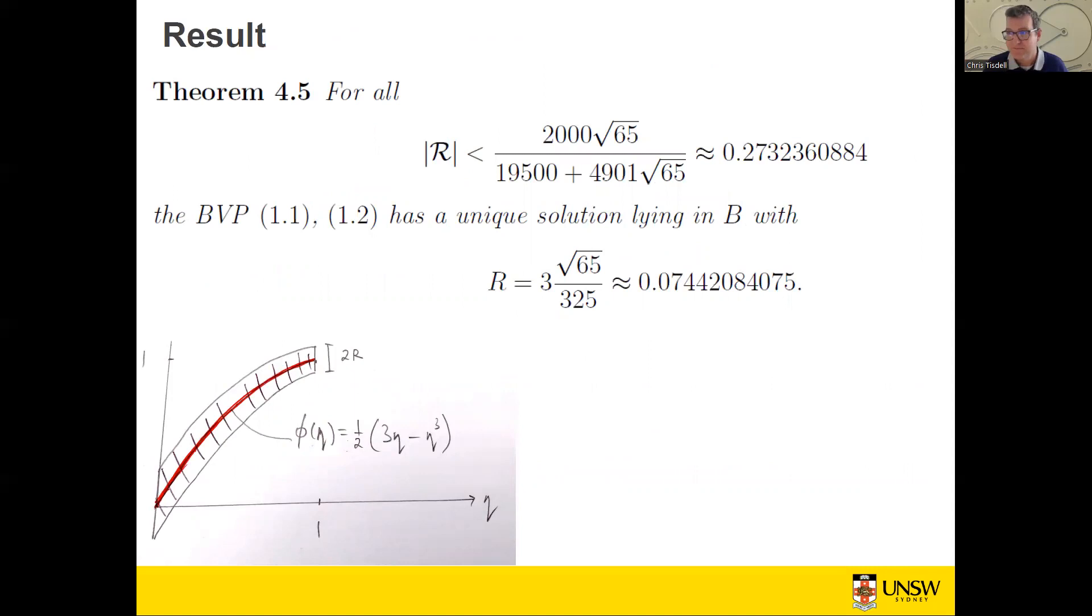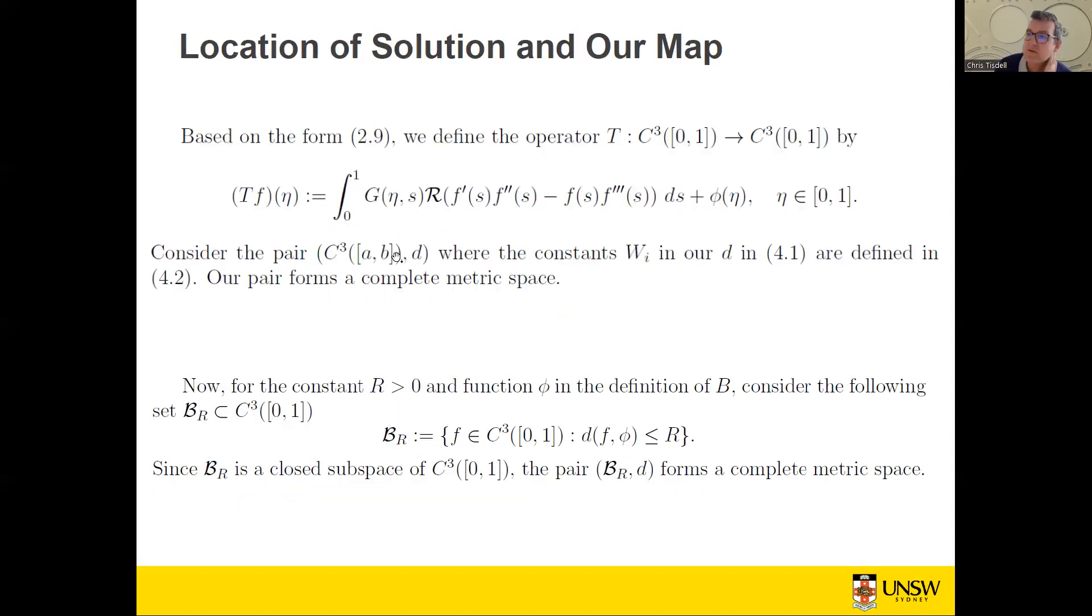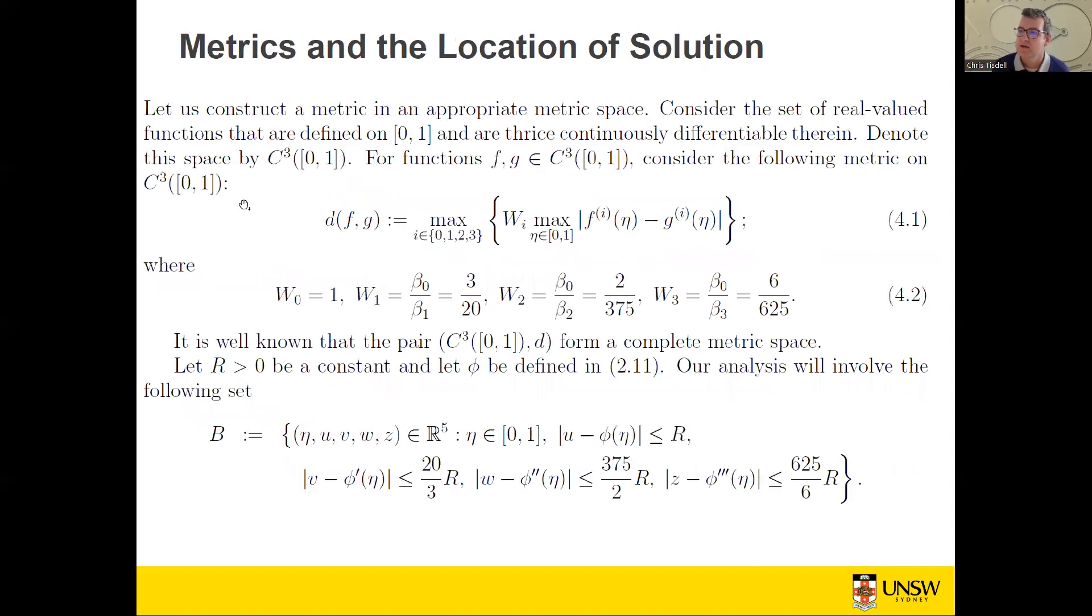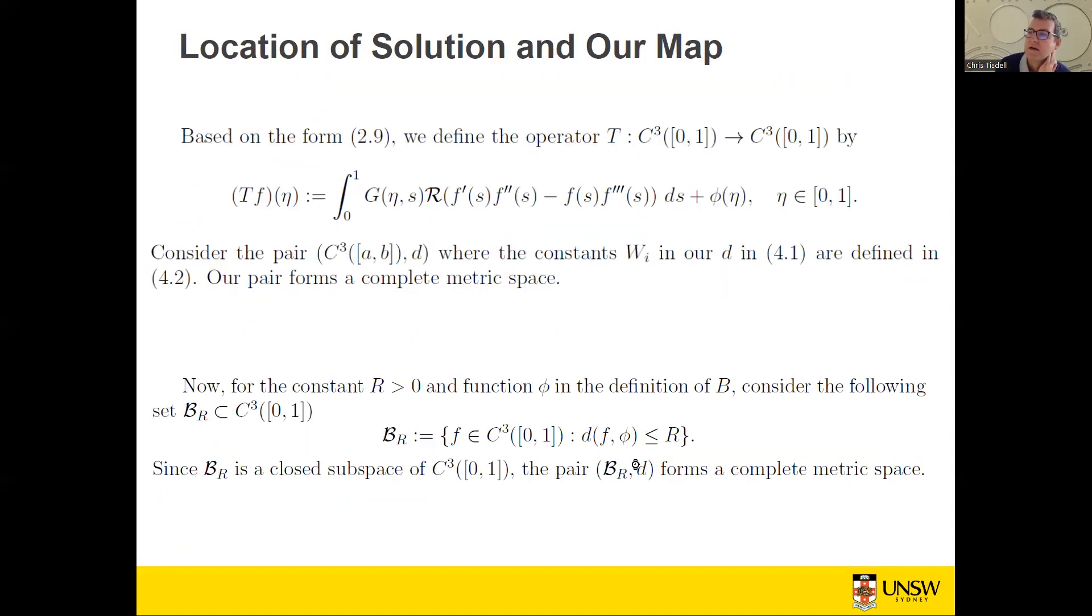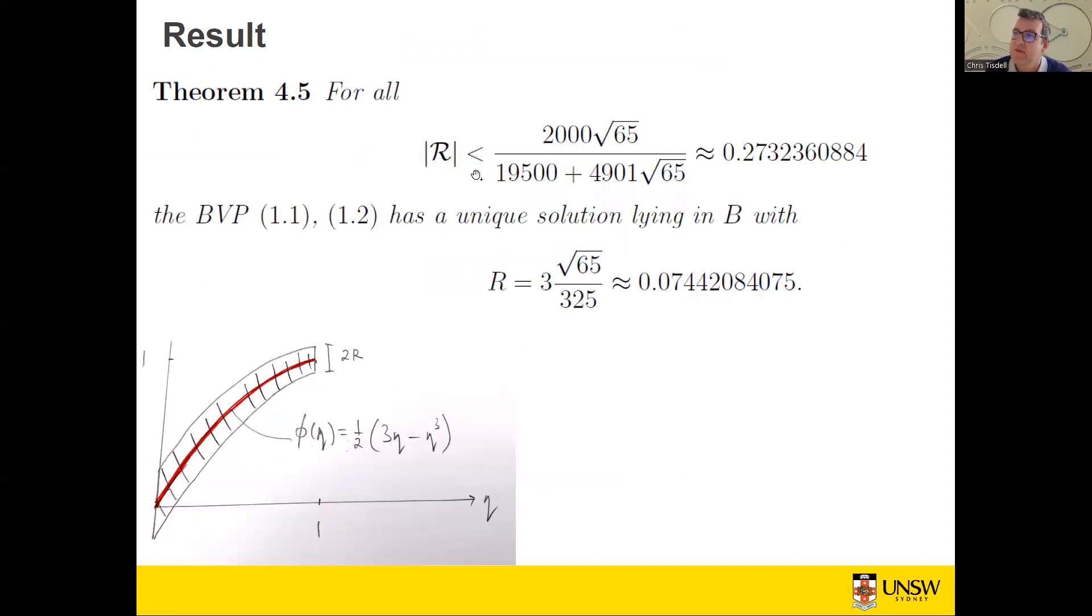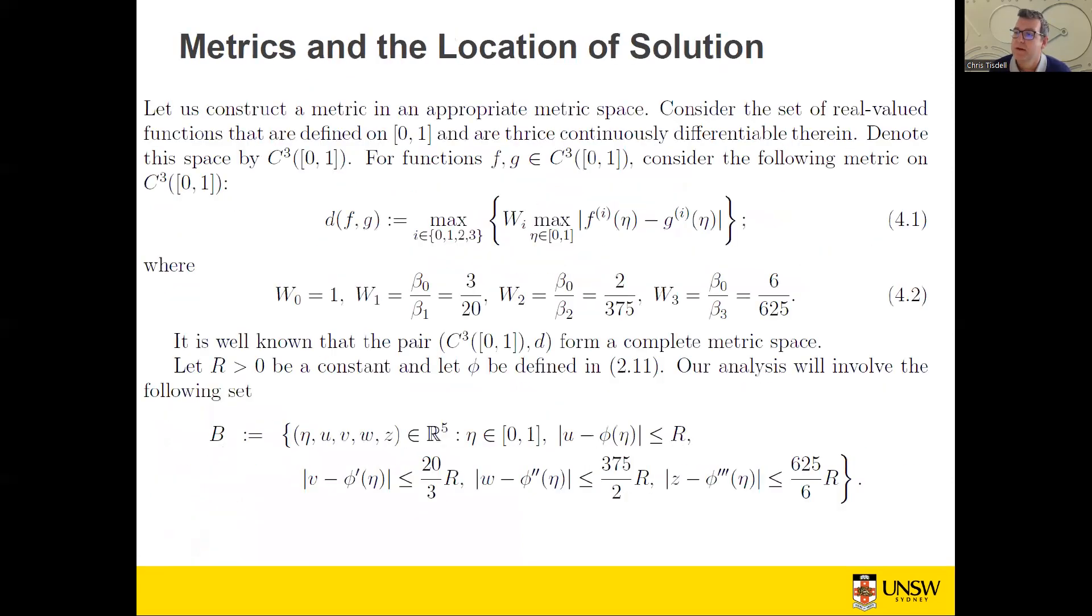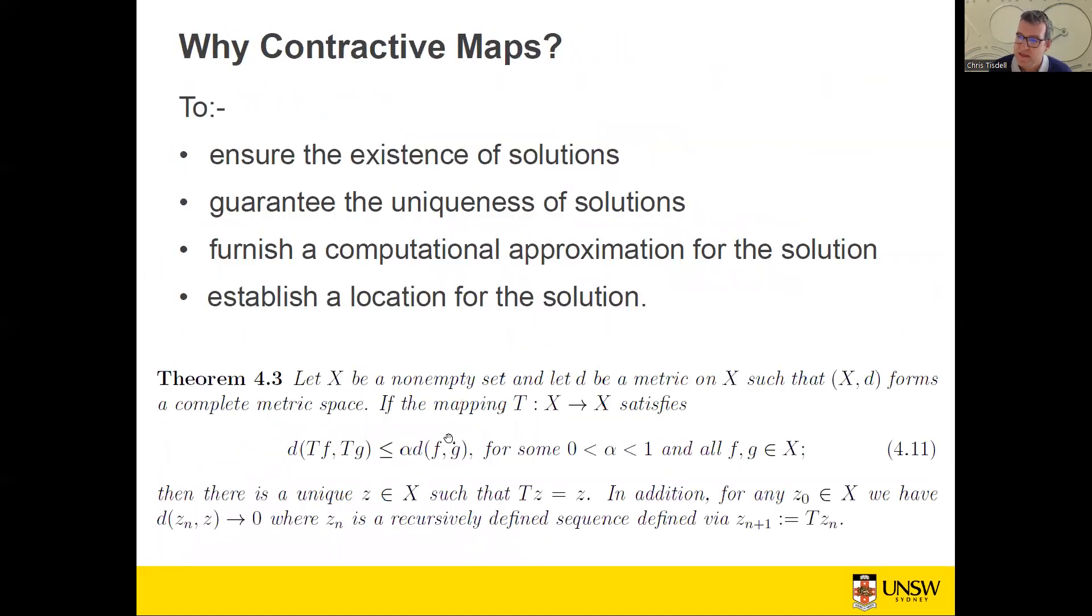Let's get to the result. There are many more results than this, but I just want to keep it as light as I can. What you can do is show what assumptions on calligraphic R, the Reynolds number, and this radius will lead to T being a contractive map. The first thing we want to do is show that T maps the ball back into itself, and then it's a contractive map. What is this alpha, where alpha is between 0 and 1? Well, it's not too hard to do. It turns out that if the Reynolds number is less than about 0.27, then we can get this holding and this holding for our particular operator T.